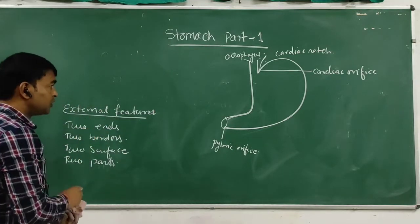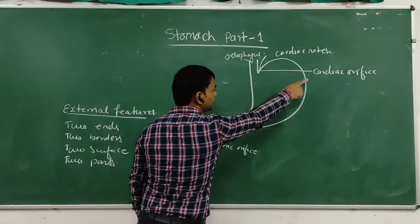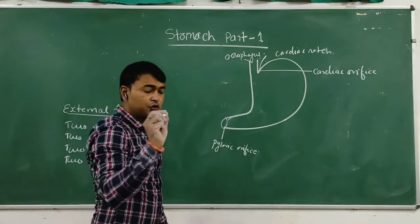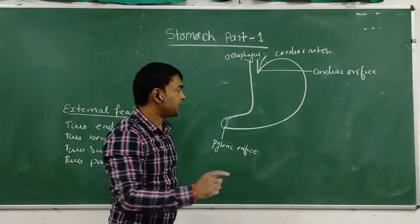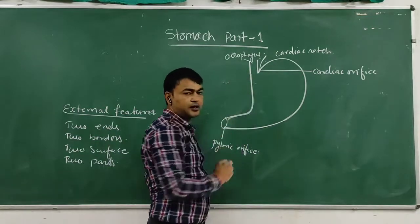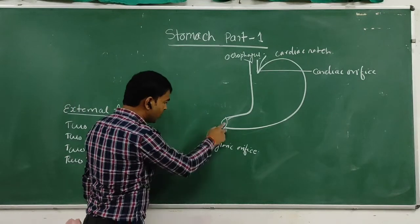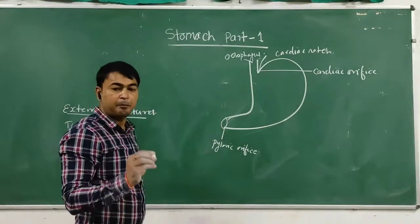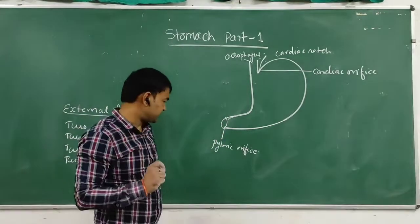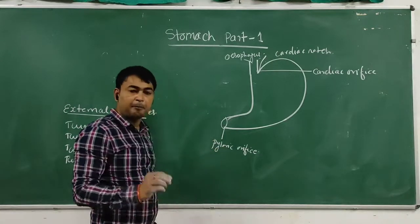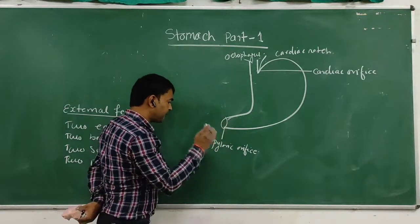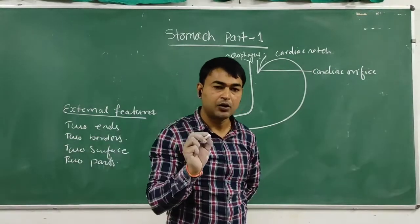The two ends: the upper end is known as the cardiac orifice or cardiac end, which is continuous with the esophagus. There is no anatomical sphincter at the cardiac orifice — only a physiological sphincter is present. The second is the pyloric end, which is continuous with the duodenum, where a true pyloric sphincter — a muscular ring — is present around the pyloric canal.